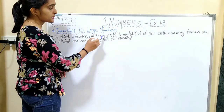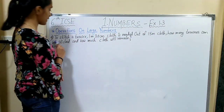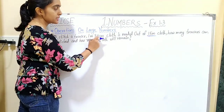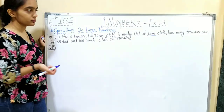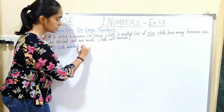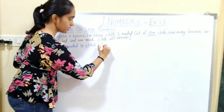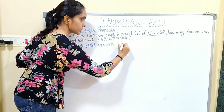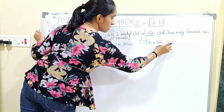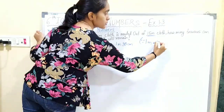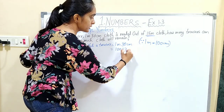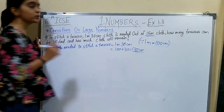The next question: to stitch a trouser, 1 meter 30 centimeter of cloth is needed. Out of 15 meters of cloth, how many trousers can be stitched and how much cloth will remain? The cloth needed per trouser is 1 m 30 cm. Since 1 meter equals 100 centimeter, that is 130 centimeters per trouser.